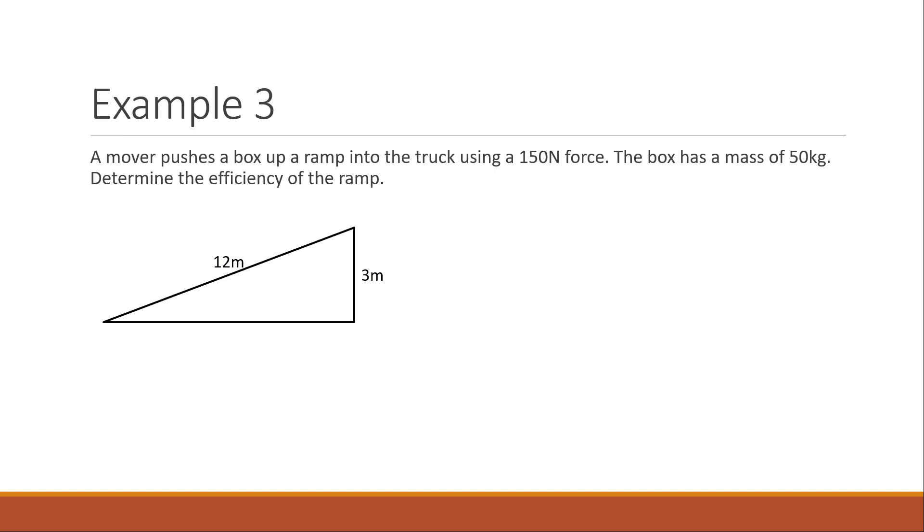Example 3. Let's take a gander. A mover is pushing a box up a ramp into a truck using 150 Newton force, and the box is 50 kilograms. Determine the efficiency of the ramp. Well, this one is a little tricky because I didn't tell you what energies or works we're dealing with. So we kind of have to scratch our head and look at this situation. If I have a ramp, box starts at the bottom, box ends at the top. What do we have? Well, we have a force pushing it, and the force pushes it 12 meters. So we could get work from applying a force, force times distance. But there's also box starts at bottom, box ends at top. That's a change in potential energy. So I have two works. Work from applying a force and work from changing the potential energy.